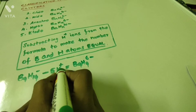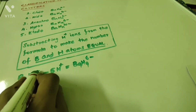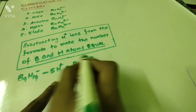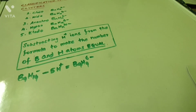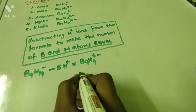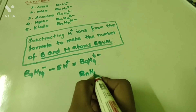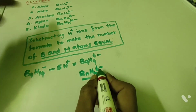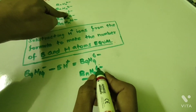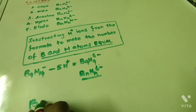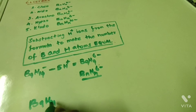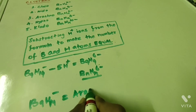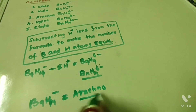5 H⁺ ions are subtracted. There is already a 1 minus charge present in the cluster compound. Therefore, the total charge is 6 minus. This formula is also written as BnHn⁶⁻. BnHn⁶⁻ is an Arachno cluster compound. Therefore, B₉H₁₄⁻ is an Arachno cluster compound.